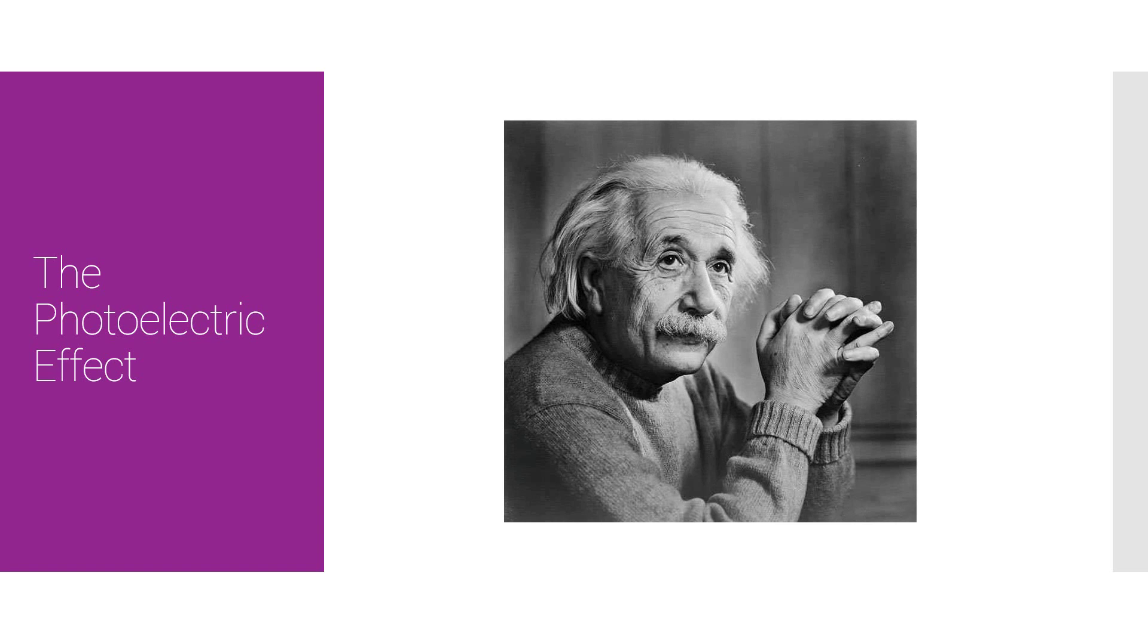Einstein's photon model of light made much more sense. What he suggested was that electromagnetic waves and their energy exist in discrete packets, which we know as photons. He saw these photons of light as having a one-on-one particle-like interaction with an electron in a metal surface. A photon would transfer all of its energy to one specific electron.